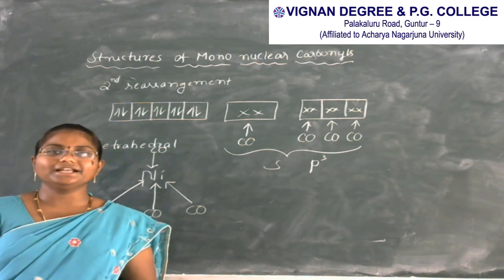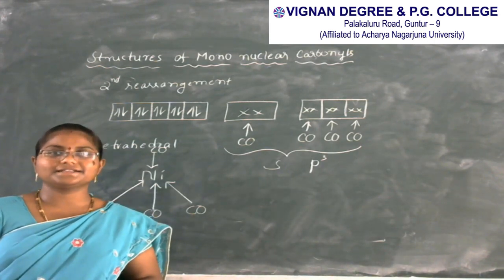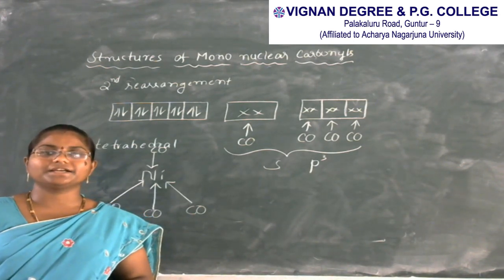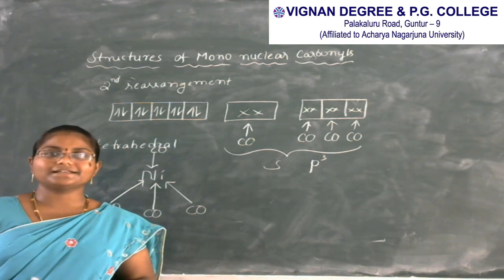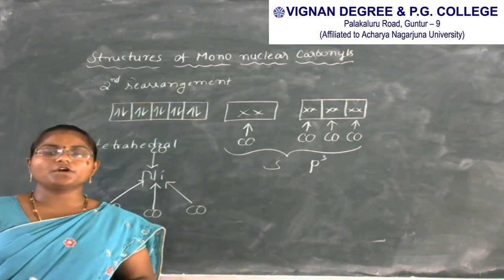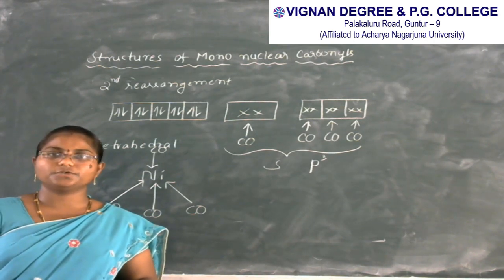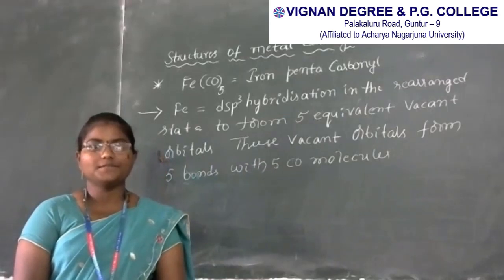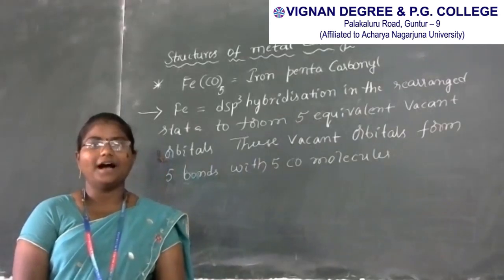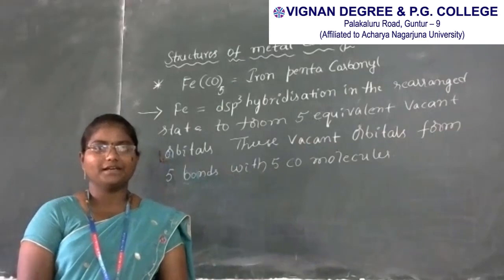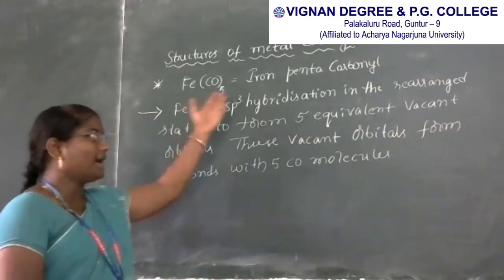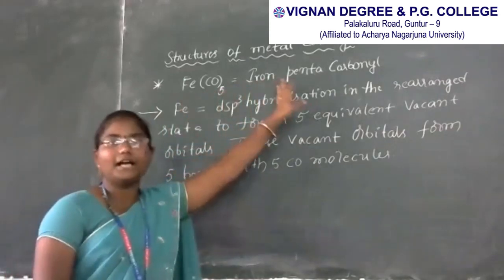The structure of nickel tetracarbonyl is tetrahedral. In nickel tetracarbonyl, nickel acts as an electron pair acceptor and CO ligands act as electron pair donors. The next structure to be discussed is iron pentacarbonyl.